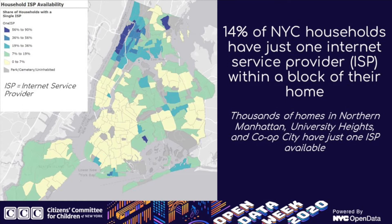ISPs are generally available citywide — each household has at least one provider — but some areas have significantly limited choice. In Washington Heights and northern Manhattan, and in areas like University Heights and Co-op City in the Bronx, 56% to up to 90% of homes have just one broadband provider available. So the different dimensions of the digital divide include 400,000 cell-only households, 450,000 households with just one ISP available, and close to 500,000 households that lack internet altogether, as of 2019.